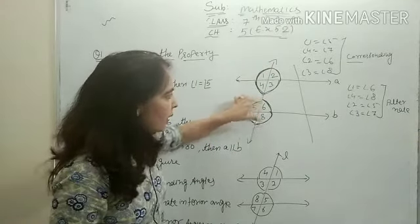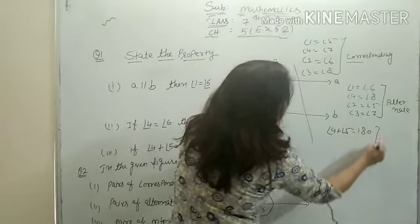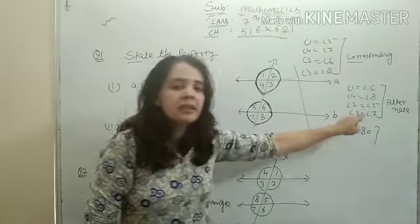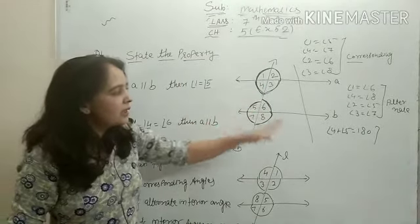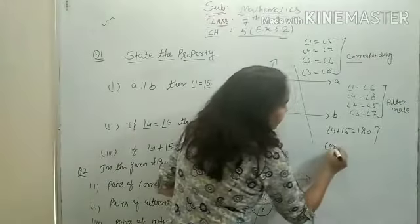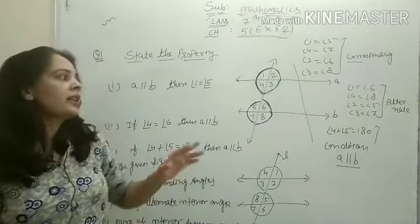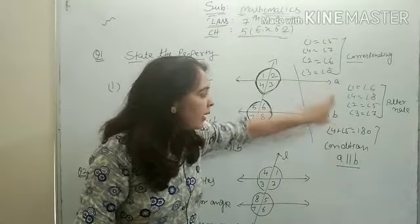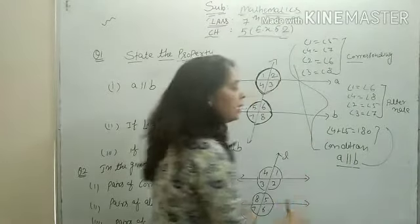अब एक property और आती है — if two lines are cut by a transversal line, the angle sum on one side of the transversal line is your first property. Second property: corresponding angles are equal. Third property: alternate angles are equal. And the angle sum on one side of a transversal is 180. ये तब satisfy होती हैं जब condition दी हो कि line A parallel है line B के, और एक transversal line cut कर रही हो।